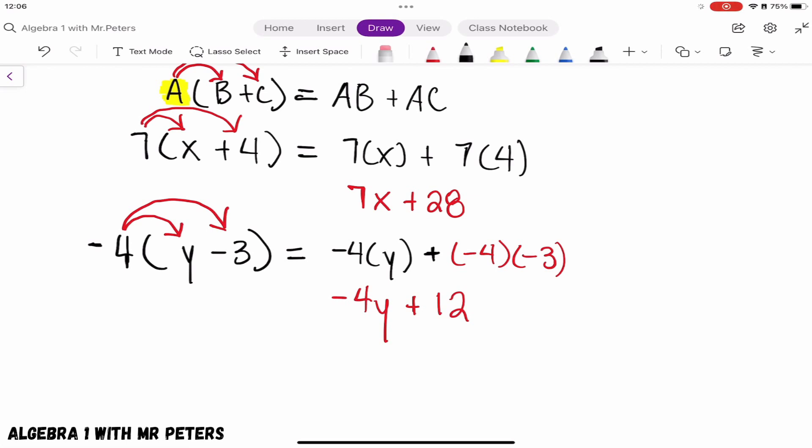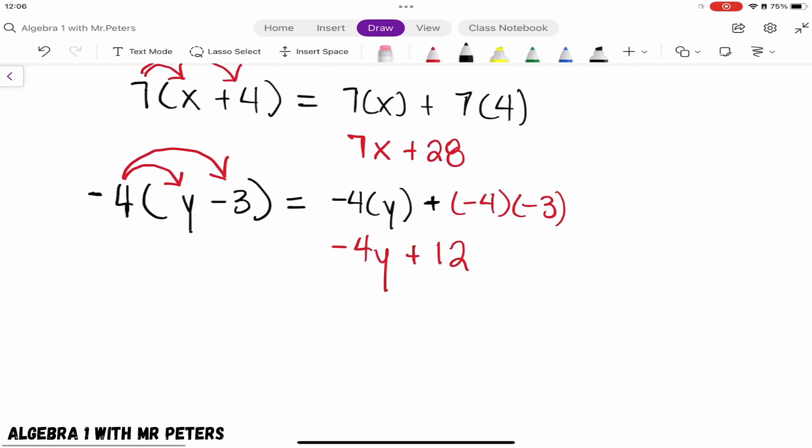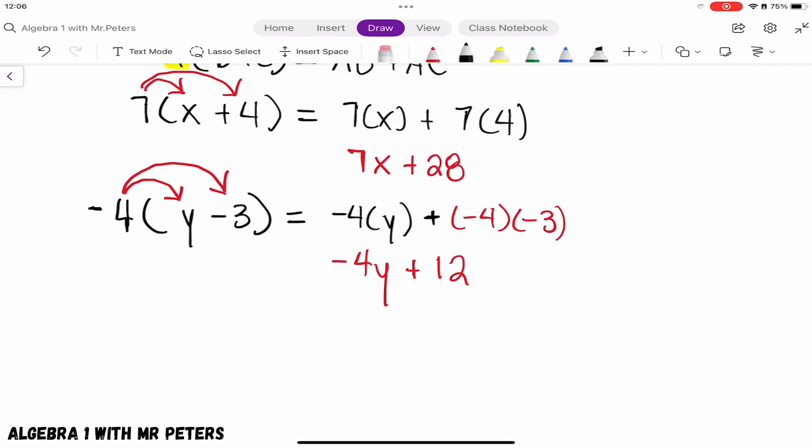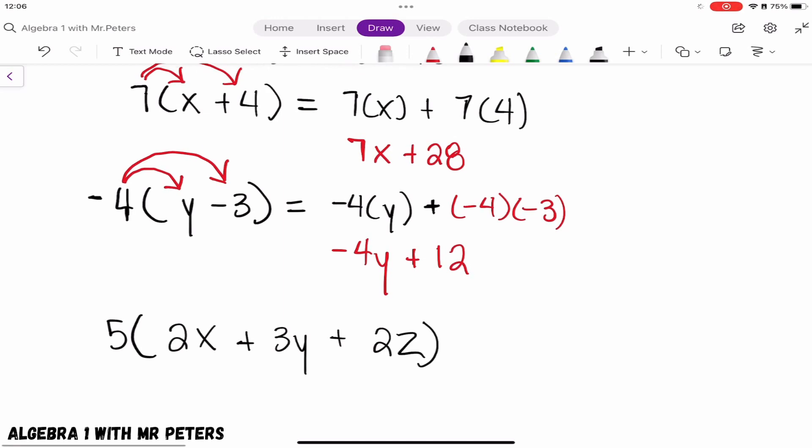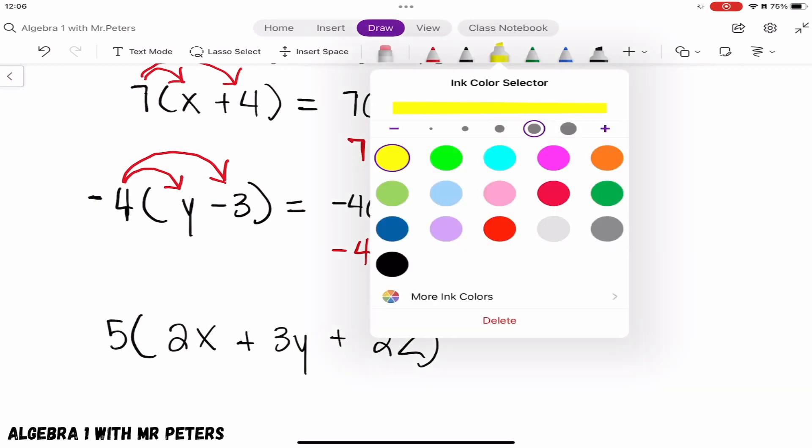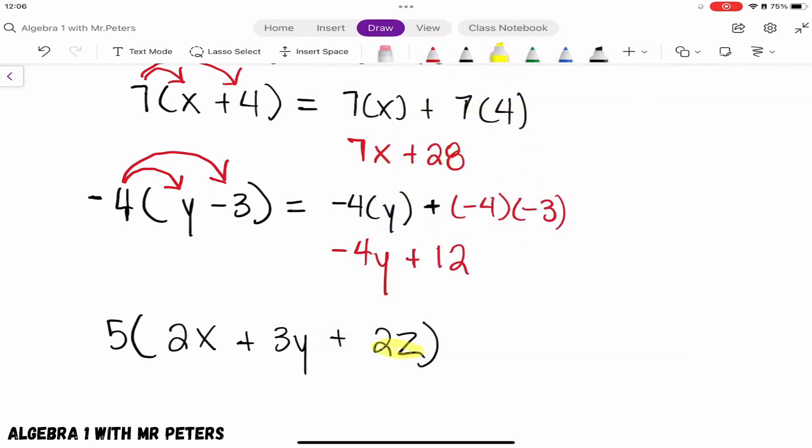Let's go on to another one. In this next example, we're distributing but instead of having two terms, we have three terms: 2x+3y+2z. What I want you to understand is everyone may think, 'Mr. Peters, the other problems only had two terms, this one has three.' After highlighting all these terms, I want you to know the rules are the same.